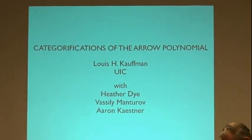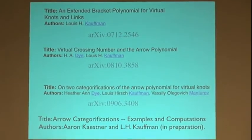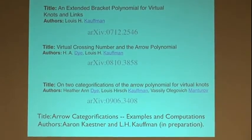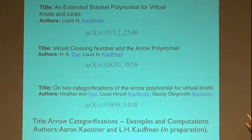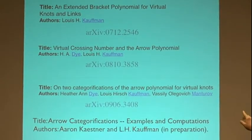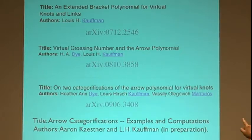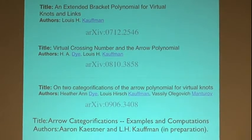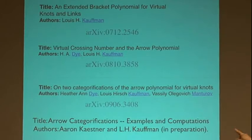Here are some references. There are a lot of papers about virtual knot theory, but if you want to get a picture of the definitions, you could go to this more recent paper of mine. It discusses the arrow polynomial and its generalizations. There's also a specific paper about the arrow polynomial by Heather and myself, a paper by Heather, myself, and Vasily on categorifications of the arrow polynomial, and some work that will appear with Aaron.